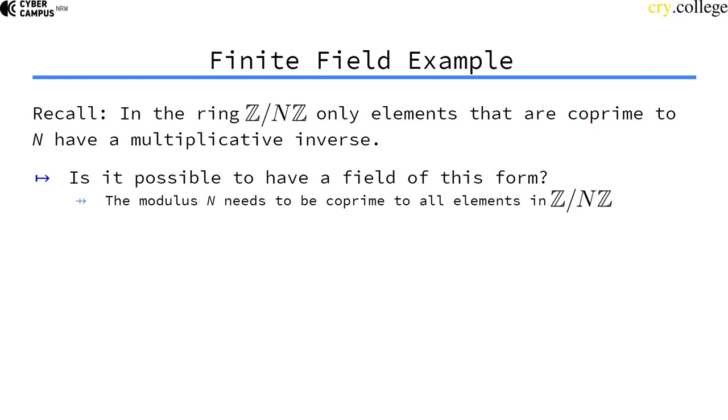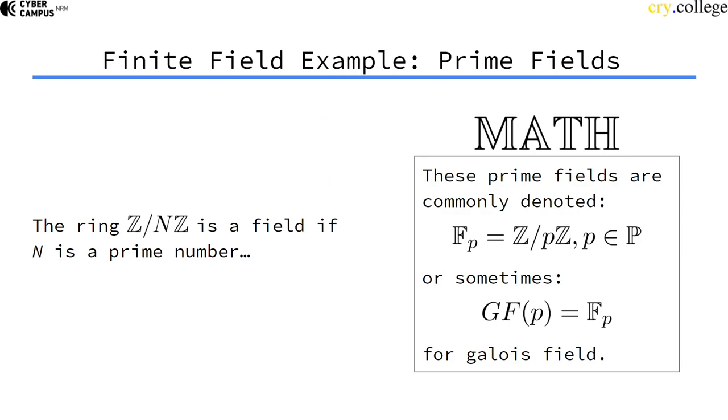Is it actually possible to have a field of this form, to have a field with numbers modulo n? We would need a set where every number is co-prime to the modulus. This ring of this form, modulo n, is exactly a field if n is a prime number.